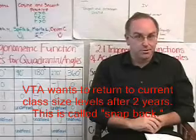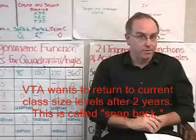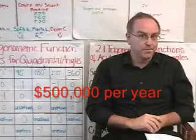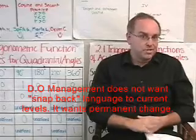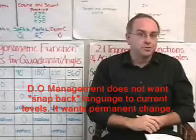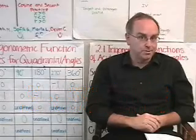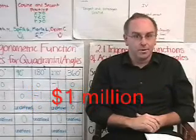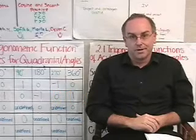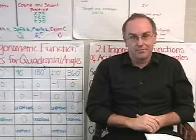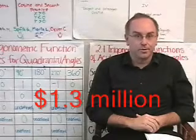For the next two years we have agreed to raise K-3 class sizes to 25 to 1. That'll save $500,000 per year. Agreed to raise middle school single day contacts for each teacher to 210 and a cap for any individual class to 36 students. That would save $1 million. At the high school level to raise the total contacts in a day to 185 and a single class cap of 38. That would save $1.3 million.